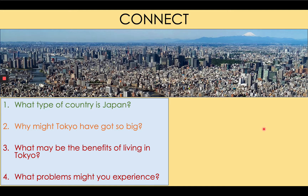Number one: what type of country is Japan? Well, if you've watched my lessons on the development topic, you will know that Japan is an HIC, a high-income country — one of the richest countries in the world. In the corner of this photo you will see Mount Fuji, a volcano. You will also notice that the city of Tokyo is vast. Why might Tokyo have got so big? Tokyo has grown because lots of people have moved or migrated there, and lots of children have been born there over the years, so the population has grown.